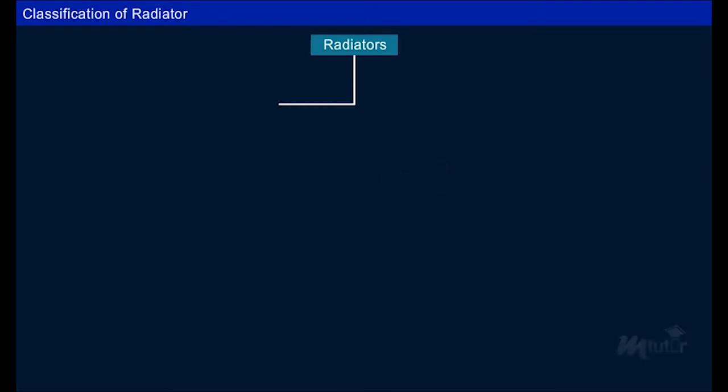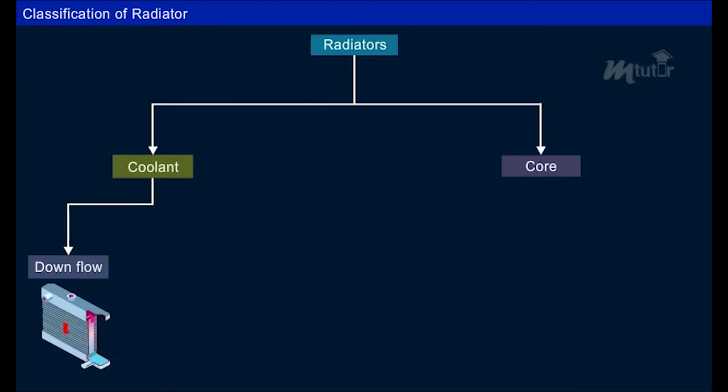Radiators are classified depending upon the direction of flow of the coolant and the core. Depending on the flow, it is classified as down flow type radiator and cross flow type radiator.